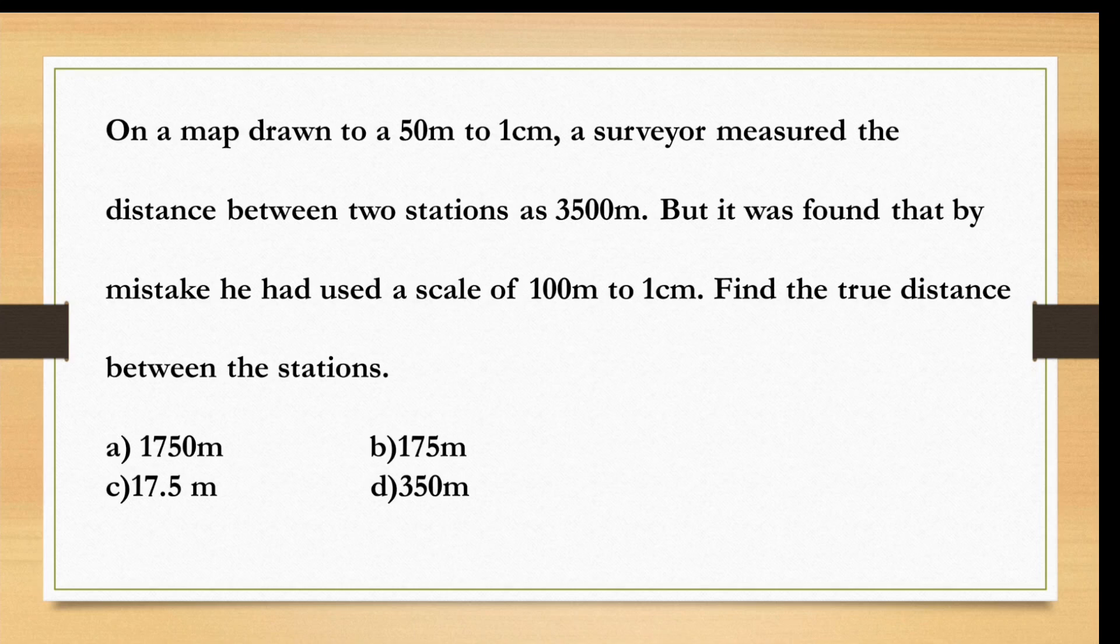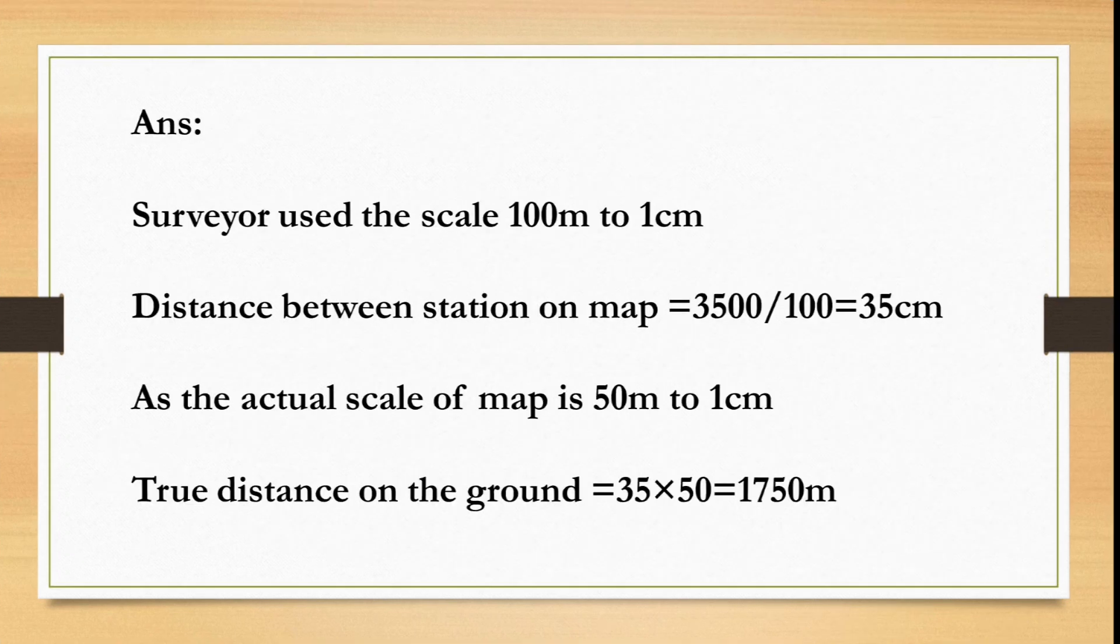Moving on to the answer. Option A is the correct answer, 1750m. Because the surveyor used a scale 100m to 1cm, the distance between the stations on map is equal to 3500 divided by 100, is equal to 35cm.